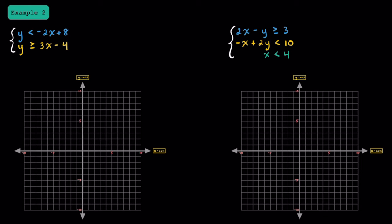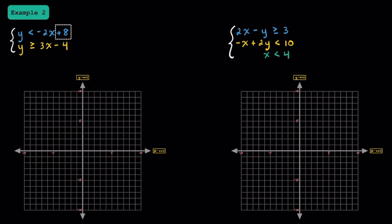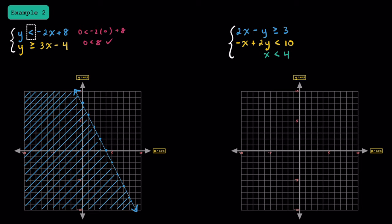In example two, let's practice graphing systems of linear inequalities to find the solutions. For the system on the left, let's start by graphing the top linear inequality. Since it's already in slope-intercept form, this plus 8 represents the y-intercept, so we can put that right here on the y-axis. Our slope is negative 2, so we move down 2 and to the right one. Since we have a less than symbol, we're going to put a dashed line through these points. Testing (0, 0): we have 0 is less than negative 2 times 0 plus 8, which gives us 0 is less than 8. Since this is true, we go ahead and shade this side of the line.